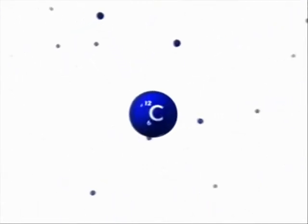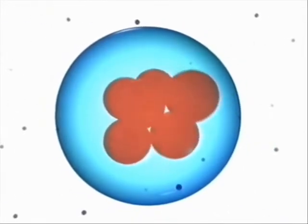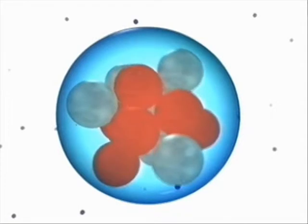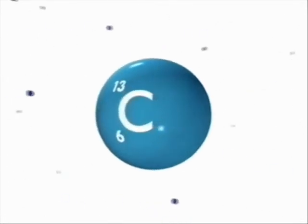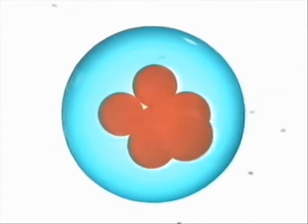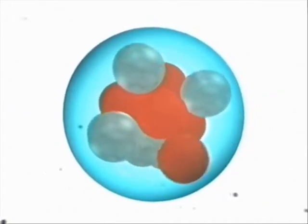99% of carbon atoms have 12 particles in their nucleus — this is their mass number. They have six protons and six neutrons. But there are other kinds of carbon atoms: one percent have a mass number of 13, with six protons and seven neutrons.